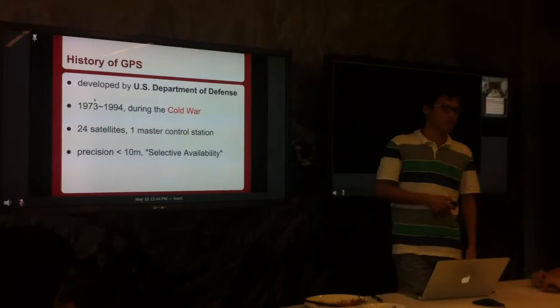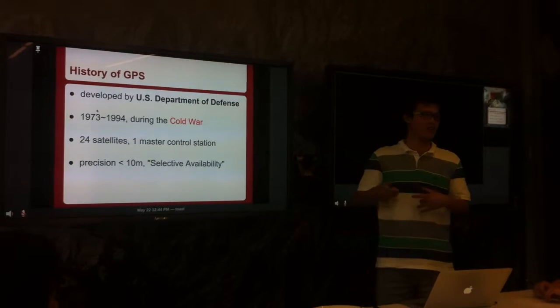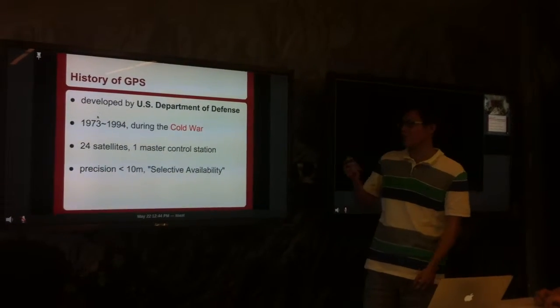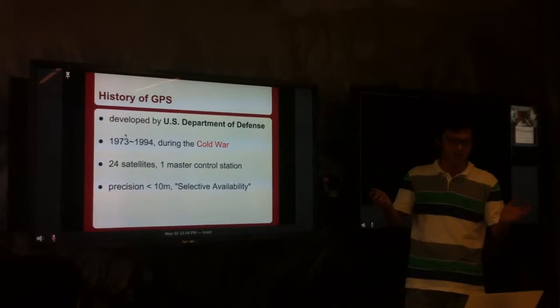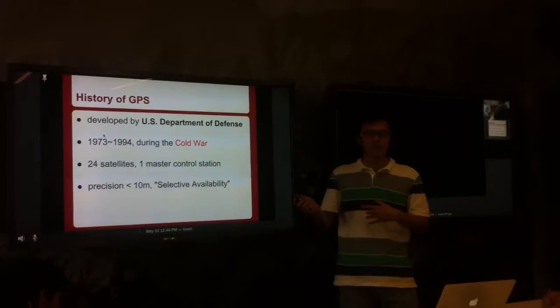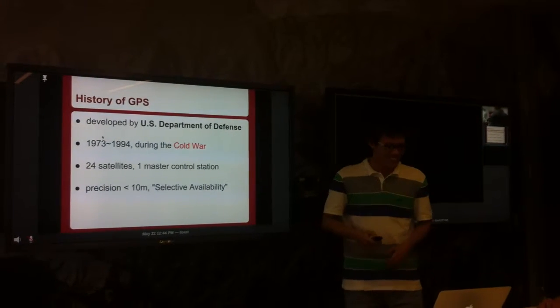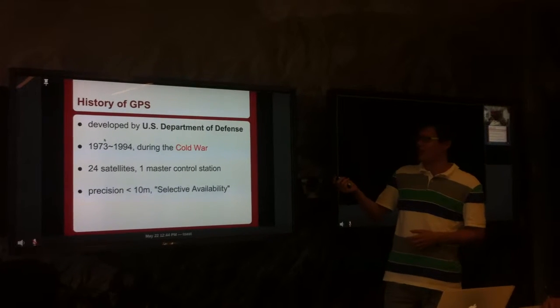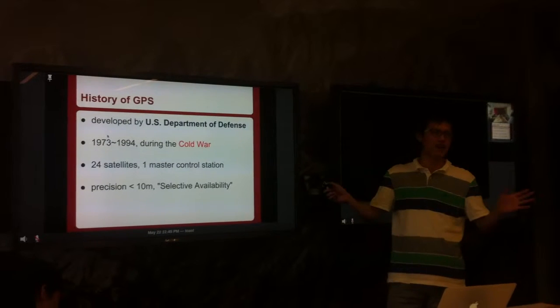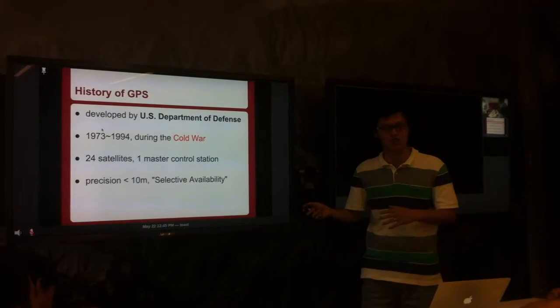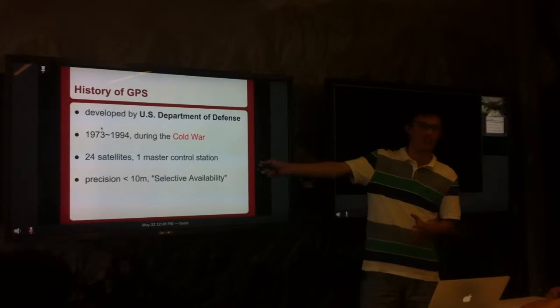Actually, it was first designed for military uses. It was designed by the U.S. Department of Defense, also known as DOD, in 1973 and finished in 1994. As you all know, that's during the Cold War, which was a really exciting and amazing time for science and technology. It contains 24 satellites, a master control station, and many other observation stations, but the most important part is the 24 satellites.